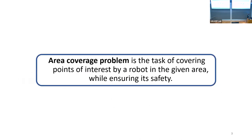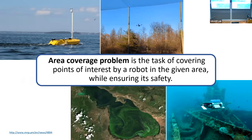What is the area coverage problem? It is a task of covering points of interest by the robot in a given area while ensuring its safety — for example, avoiding obstacles. The coverage problem is commonplace in many different domains, from agriculture to manufacturing, indoor cleaning robots, and so on. For me particularly, all my PhD research was motivated by marine explorations and marine environmental monitoring problems.